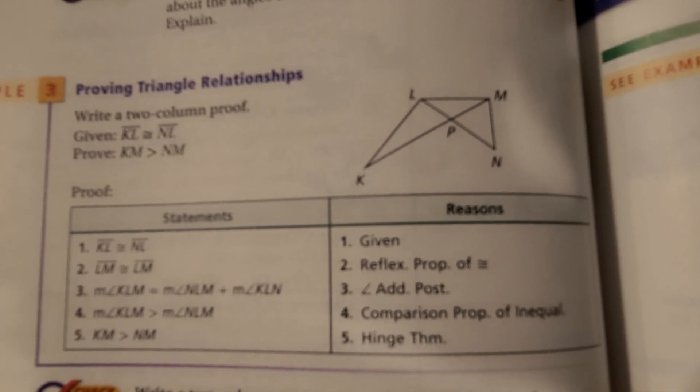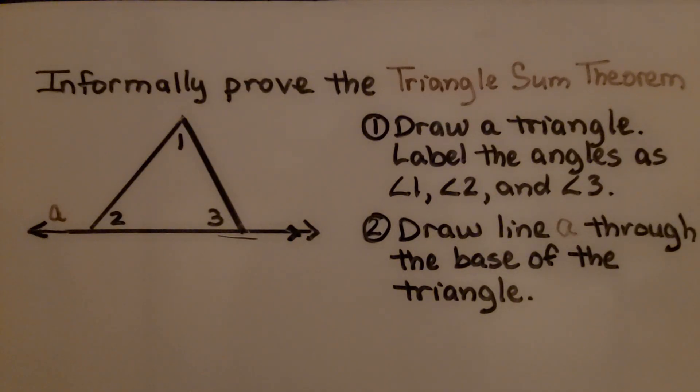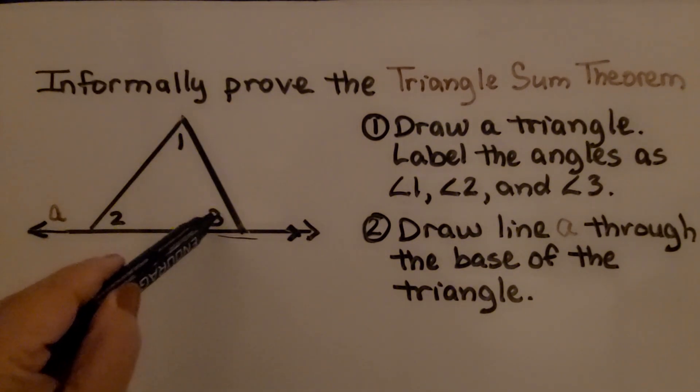We're going to informally prove this. To informally prove the Triangle Sum Theorem, the first thing we're going to do is draw a triangle. We're going to label the angles as 1, 2, and 3.